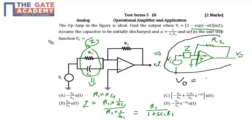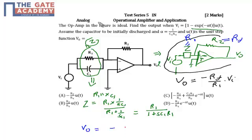For a standard inverting amplifier, the output expression is V0 = −(Rf / R1) · Vi. In our case, Rf is replaced by R2 and R1 is replaced by Z. So the output expression becomes V0 = −(R2 / Z) · Vi.